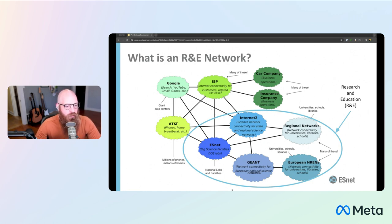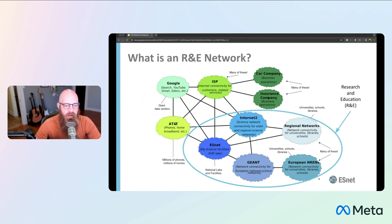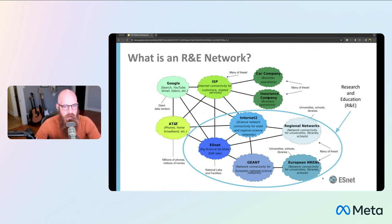There's this kind of blue bubble of R&E networks — research and education networks. These are basically high-speed, purpose-built networks for science and education purposes, so they're a little bit different. That has allowed us to do some unique things. IPv6 adoption has been very high in research and education, and very early on at ESnet — our allocation is pretty much the first one in the ARIN region. So we've been doing it for a very long time.